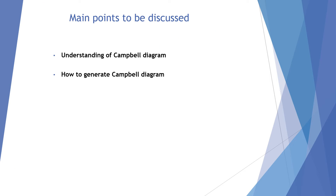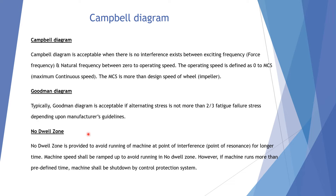Let's understand how the Campbell diagram is generated and how, with its help, we can analyze whether the natural frequency has no interference with the exciting frequency, and if it does, how we can protect the machine to avoid tripping or damage. A Campbell diagram is acceptable when there is no interference between the exciting frequency — also called the force frequency — and the natural frequency, from zero to operating speed.